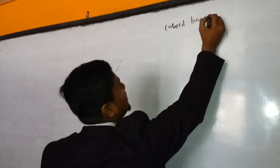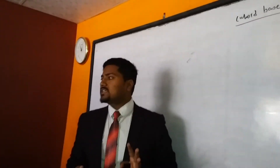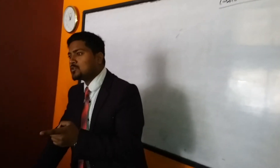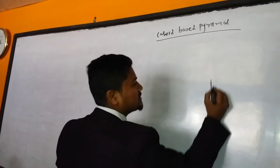My name is Srimanosh Kumar Shah and today I am going to solve questions related to the cuboid-based pyramid. In a cuboid-based pyramid, the base is square, and these questions are important — they can come for four or five marks. Cuboid means length, breadth, and height are not all equal. Let's understand the figure I am going to draw here.